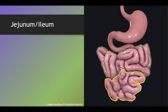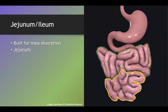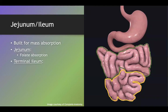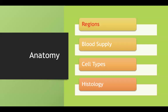Both the jejunum and ileum are built for mass absorption. The jejunum is known for folate absorption. The ileum, with specific attention to the terminal ileum, is known for vitamin B12 absorption.